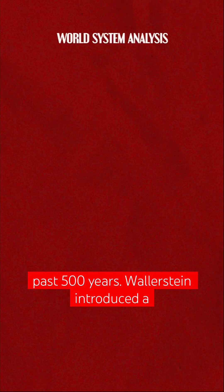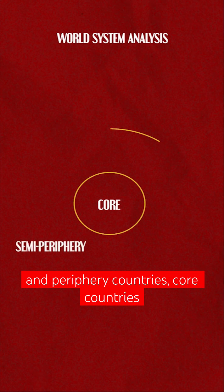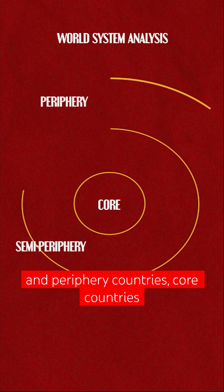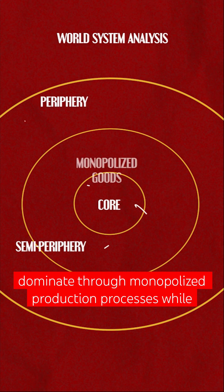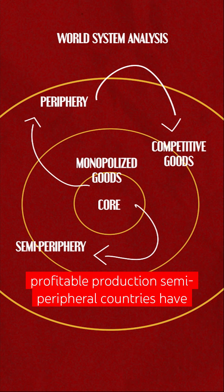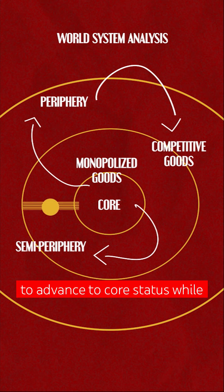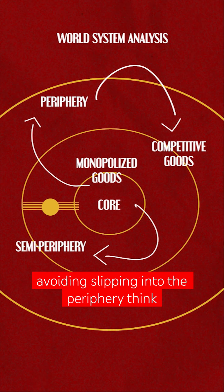Wallerstein introduced a three-tier system with core, semi-periphery, and periphery countries. Core countries dominate through monopolized production processes, while peripheral countries engage in competitive, less profitable production. Semi-peripheral countries have a mix of both and strive to advance to core status while avoiding slipping into the periphery.